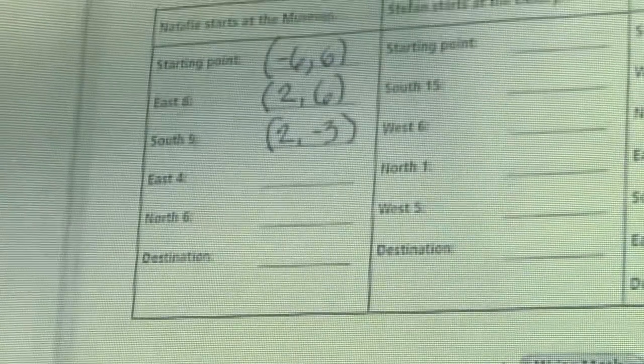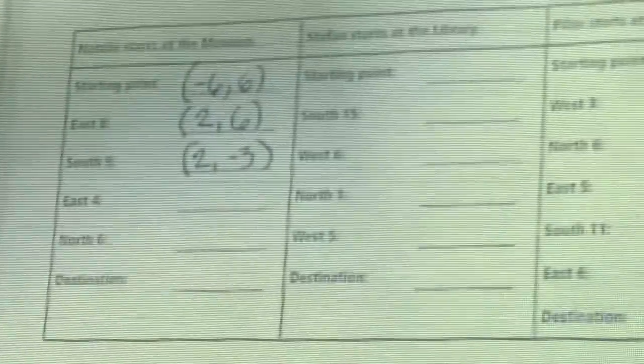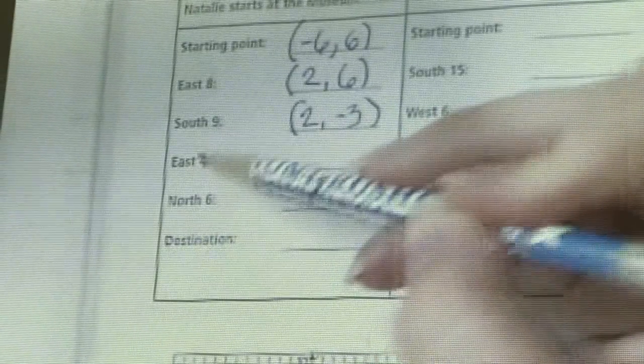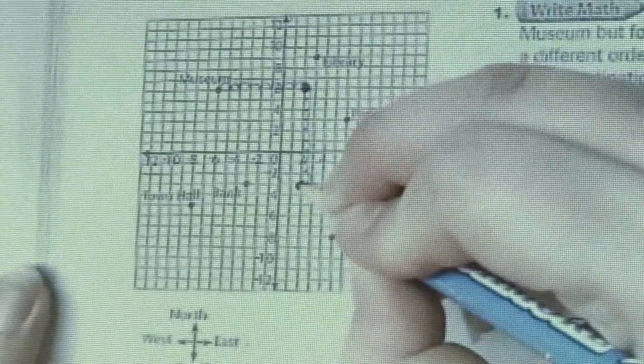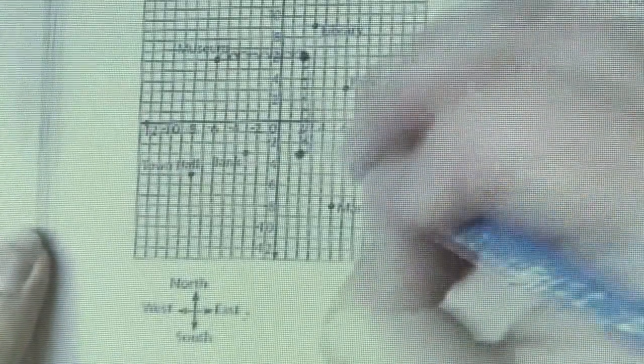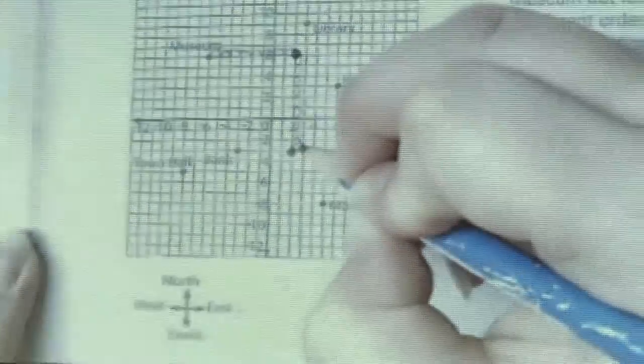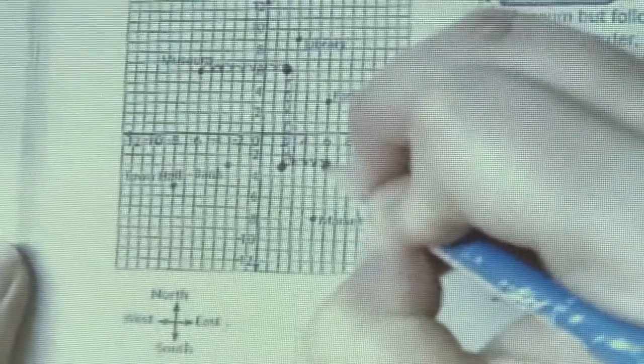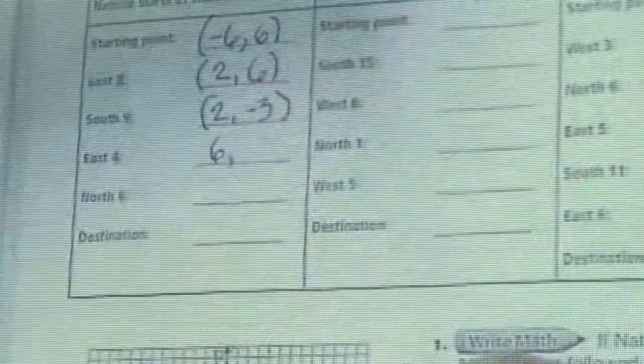From this point that I was just at, I need to move east four units. I'm starting at my dot where I last was. I need to move eastward which is to the right: one, two, three, four. Put a new dot. Put down my coordinate. I ran to number 6, and I dove down to negative 3.